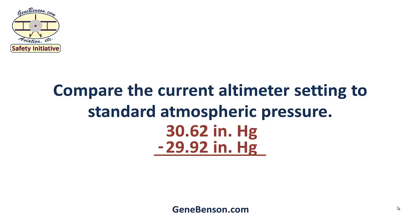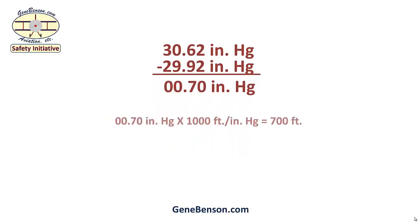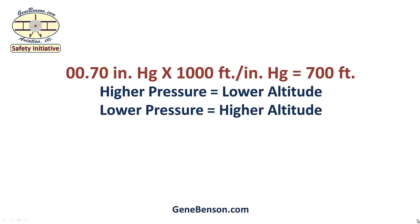Since that number is greater than 29.92, we will place it on top so that we can subtract. Our result is 0.70. Next, we multiply the value obtained through our subtraction by 1,000. That's because a pressure change of 1 inch of mercury represents an altitude change of 1,000 feet. So we have determined that our pressure altitude is 700 feet different from field elevation.